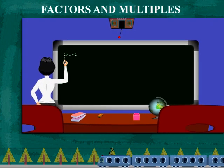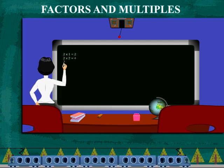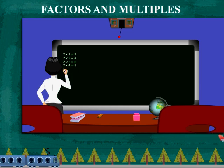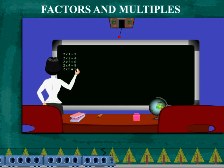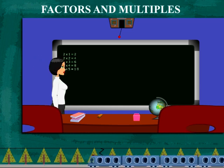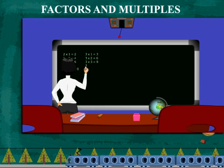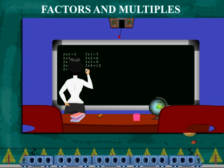All of you know your tables and Lucy ma'am is writing the tables briefly on the board. This is the table of two. And now the table of three. Everyone knows this.